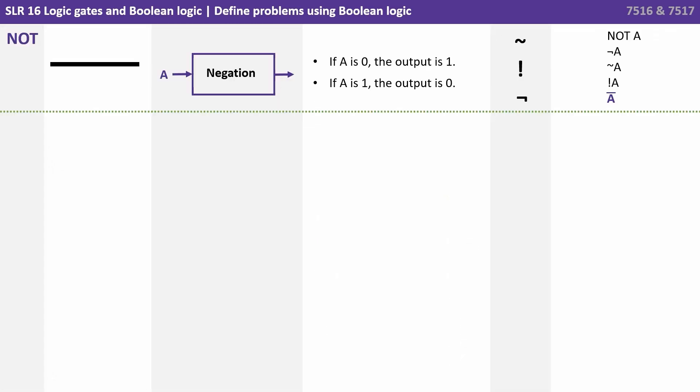So let's have a look at those symbols now. The first is NOT. This is negation. It effectively reverses the input. So if A is 0, the output becomes 1. If A is 1, the output becomes 0. For AQA, the notation for NOT or negation is represented by a horizontal line over the part of the expression that's being negated.